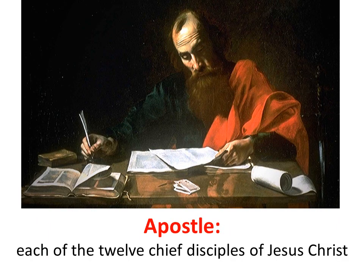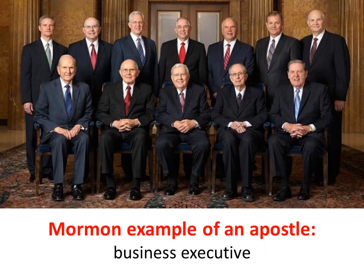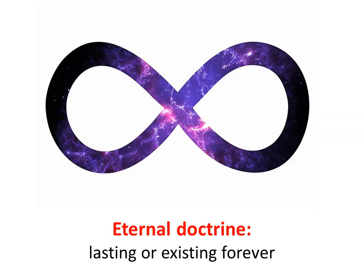The definition of 'apostle' — each of the 12 chief disciples of Jesus Christ. Simple answer found on Google. But now the general authorities look more like business executives in their shirts, ties, and jackets. Looks like they would fit into any boardroom across corporate America.